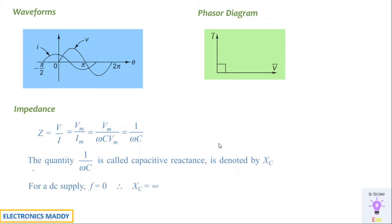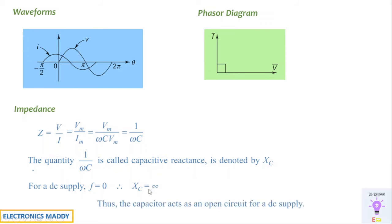Considering a DC supply, the frequency is zero. Since omega = 2πf, omega will also be zero, so Xc = 1/(omega C) = 1/0 = infinity. The capacitive reactance will be very high — ideally infinite. This is why a capacitor acts as an open circuit for DC supply. In summary, an inductor acts as a short circuit and a capacitor acts as an open circuit for DC supply.